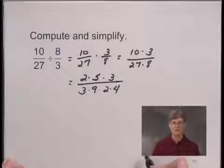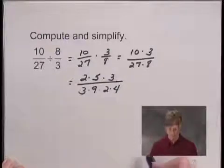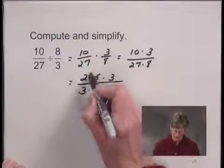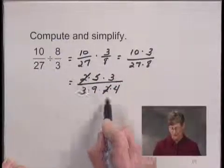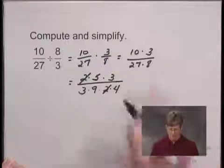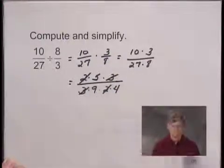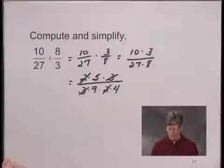Now we're looking for factors that are common to the numerator and the denominator. I see that there's a factor of 2 in each place, so I can cancel the 2's. It's equivalent to 2 over 2, which is 1. And I can do the same thing with the factor of 3 in each place. 3 over 3 is equal to 1.